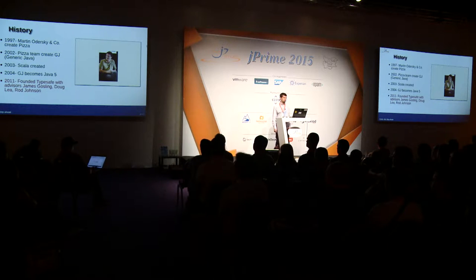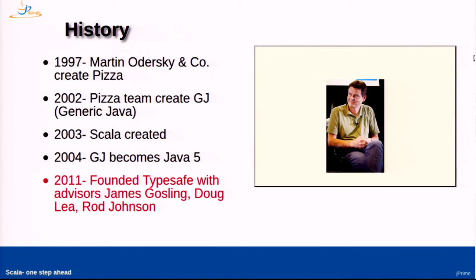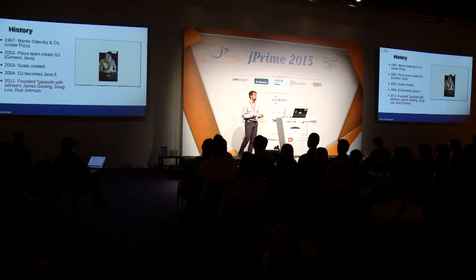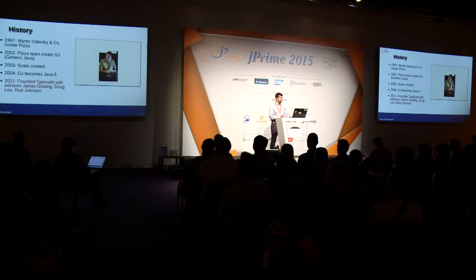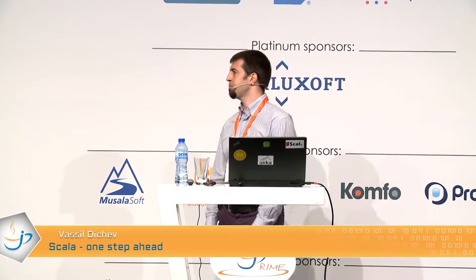It's a little known fact that the javac you are using today was actually created by Martin Odersky, who is also the creator of Scala. Fairly recently, in 2011, a commercial company was founded called TypeSafe, which was supposed to support and consult on everything Scala related. And there were many luminaries from the Java world involved as advisors: James Gosling the creator of Java, Doug Lea the creator of many concurrent utilities, and Rod Johnson the creator of the Spring framework — who later became a member of the TypeSafe board of directors.